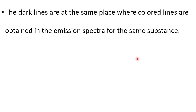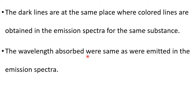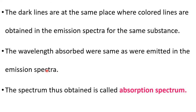The dark lines are at the same position where colored lines are obtained in the emission spectra for the same substance. The wavelengths absorbed are the same as those emitted in the emission spectra. The spectrum thus obtained is called absorption spectrum.